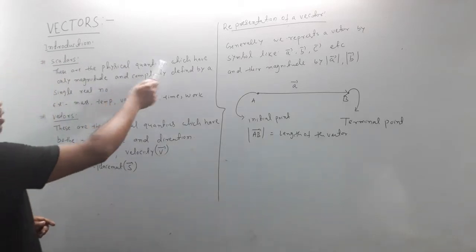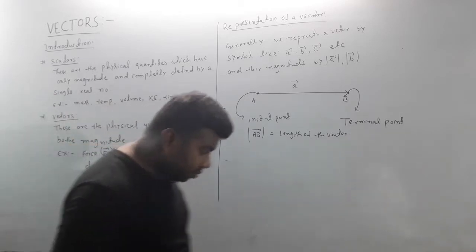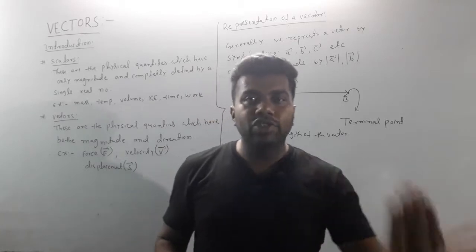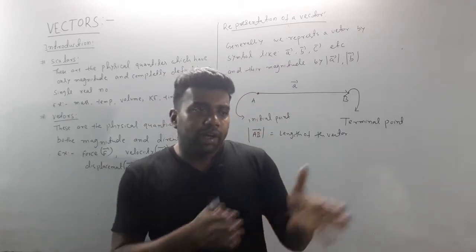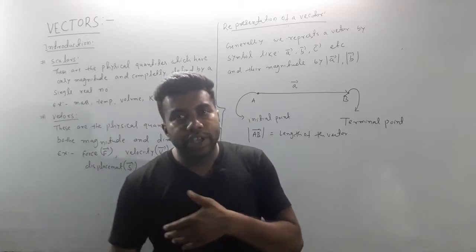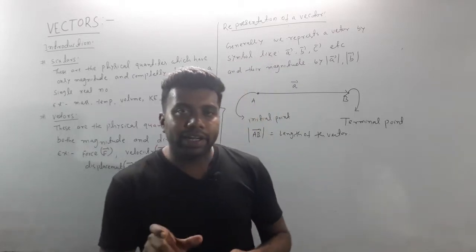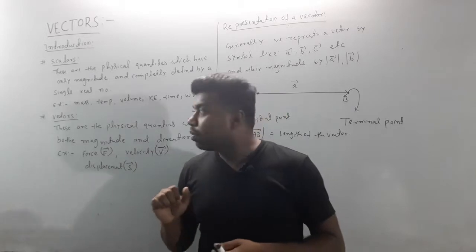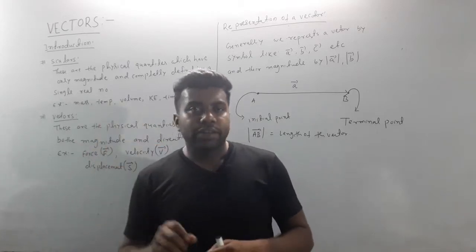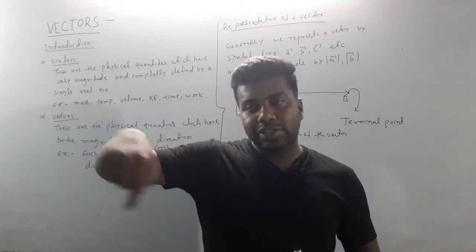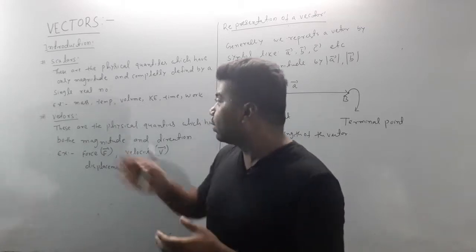Scalar quantities are physical quantities which are defined only by magnitude — completely defined by a single real number. This quantity is direction independent, so it doesn't depend on direction. For example, temperature: a candle will light and the temperature is the same amount regardless of direction — left side or right side.